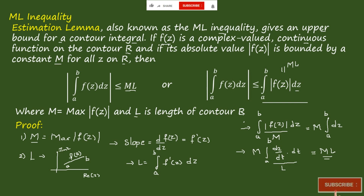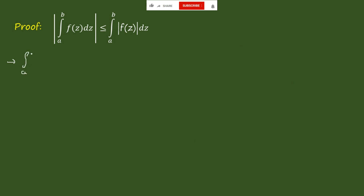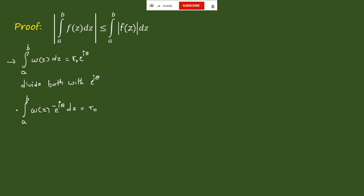Now we will prove how the modulus of the integral from a to b of f(z) dz is less than or equal to the integral from a to b of |f(z)| dz. The integral from a to b of w(z) dz is a complex number, so in polar form we write it as r₀·e^(iθ). Dividing both sides by e^(iθ), we get the integral from a to b of w(z)·e^(-iθ) dz equals r₀.